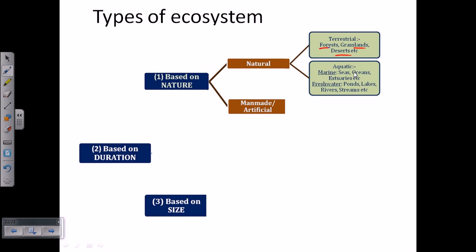The aquatic one is completely water-based, like marine ecosystems like seas, oceans, for example. Freshwater ecosystems are also there. The marine system is saltwater ecosystem because seas and oceans are salty. Freshwater ecosystems include ponds, lakes, rivers, streams, etc.